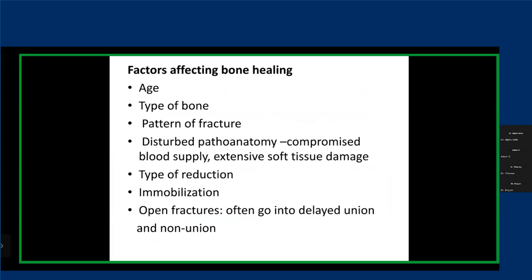What affects bone healing? There are multiple local and systemic factors: age, the type and site of bone, the pattern of fracture, any local disturbance like compromised blood supply, extensive soft tissue damage to the site, and also our type of reduction. If we're able to achieve anatomic reduction and decrease the strain at that fracture site to less than 2%, the chances are it's going to have direct bone healing.